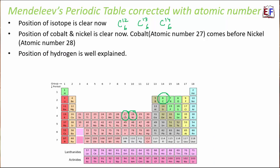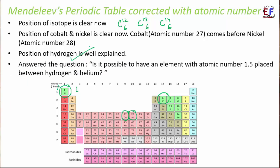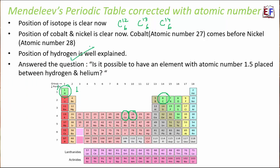The third limitation was the position of hydrogen, and that was also sorted. Hydrogen has an atomic number of one, and its electronic configuration gives it one valence electron, placing it in group one and period one. The fourth limitation was whether it is possible to have an element between two existing elements.